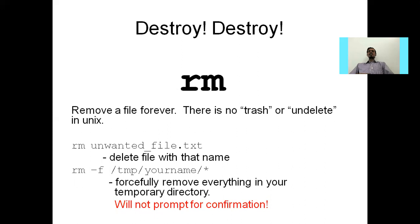The rm command is used to remove a file forever. There is no trash or undelete in Unix, and there is no recycle bin. So if you want to remove a file or directory permanently, use rm. For example: rm unwanted_file.txt deletes that file. If you want to forcefully remove a directory and everything in it, you can use rm -rf /tmp/your-name/sd — it will forcefully remove everything in that directory.